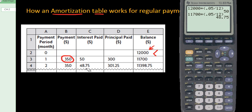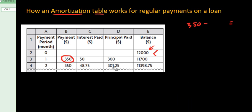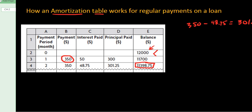So that's the interest that's owed on this period, and there it is right there — that's the interest. This number comes from the $350 minus the interest on the remaining balance, which gives you your amount that actually gets taken off of the principal now to leave you with the new balance.